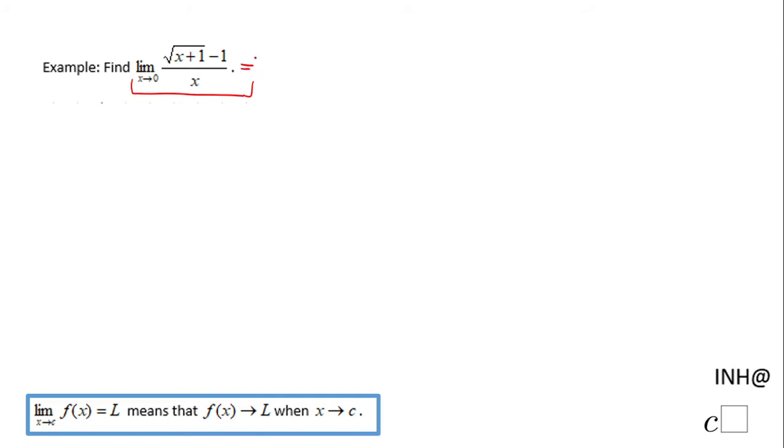The first thing you want to do is plug the value given here and see what you get. We get 0 plus 1 minus 1 over 0. We already notice this 0 as a denominator, which is a problem. Also, the numerator will be 0 because square root of 1 is 1, and 1 minus 1 is 0. So we have what is called an undefined form, and we have to find a different way to handle this limit.